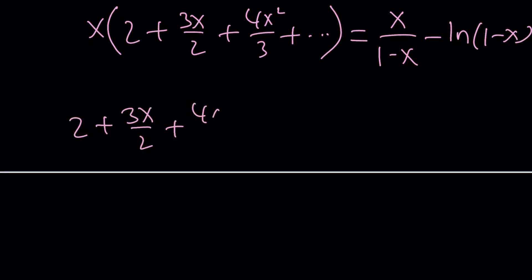So our sum, the desired sum, is this divided by x, which is 1 over 1 minus x minus ln 1 minus x divided by x. And that should be it.